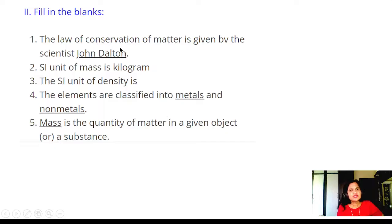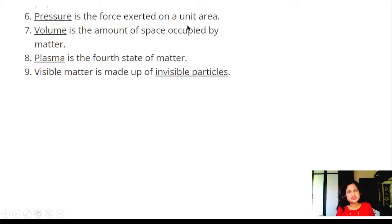Fill in the blanks: Law of conservation of matter is given by the scientist John Dalton. SI unit of mass is kilogram. SI unit of density is kilogram per cubic meter. The elements are classified into metals and non-metals. Mass is quantity of matter in the given object or substance. Pressure is the force exerted on a unit area. Volume is the amount of space occupied by matter. Plasma is the fourth state of matter. Visible matter is made up of invisible particles.